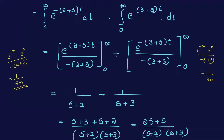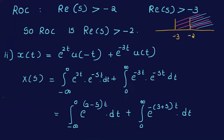For a right-sided signal, the ROC is defined as the real part of s greater than alpha-max. Here, we have Re(s) > -2 and Re(s) > -3. Taking the intersection of these two regions, the ROC is Re(s) > -2.